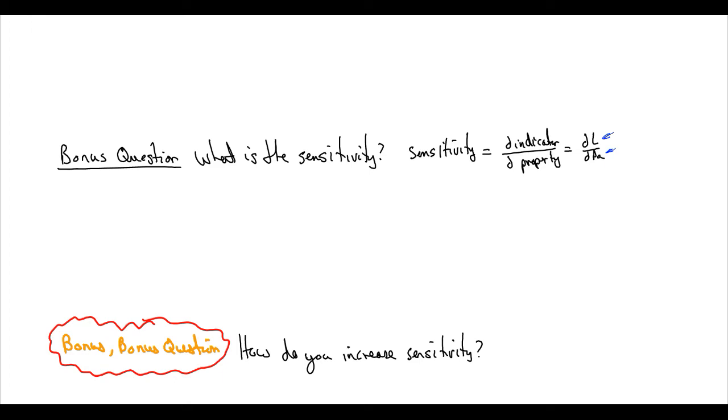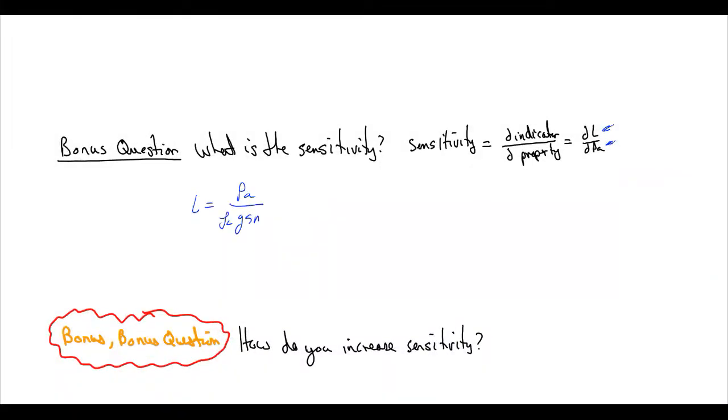So if we want to take the derivative of this, derivative of L with respect to PA, this is the thing I would do first to solve for L. So we're going to do that. We say L is equal to PA over rho L G sine theta.